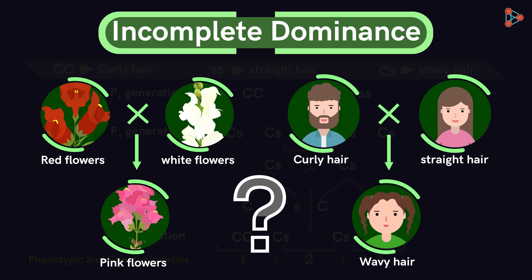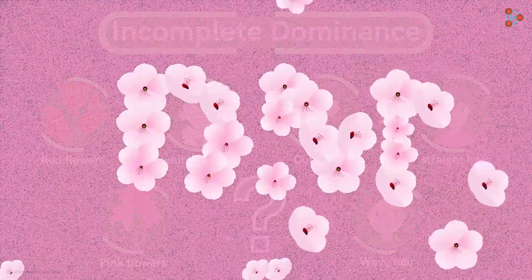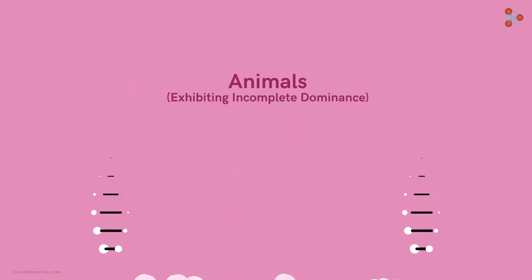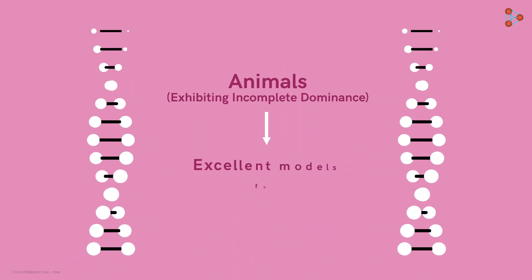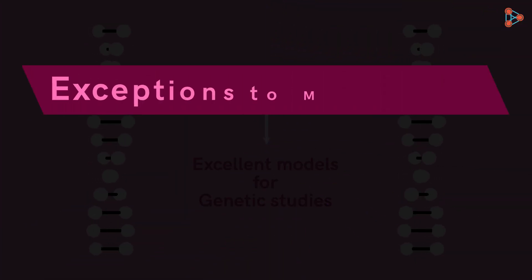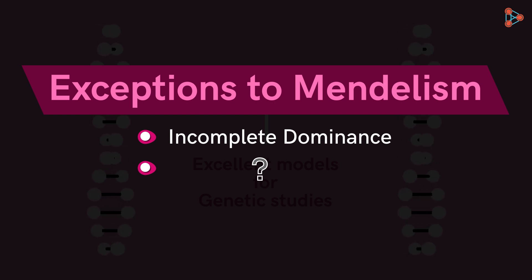So how does this help us? When it comes to plants, we obtain several beautiful phenotypes which can be used for many purposes. Animals exhibiting incomplete dominance are excellent models for genetic studies. Are there other types of exceptions to Mendelism? Yes! There is one more in the list. Let's have a look at it in the next part.